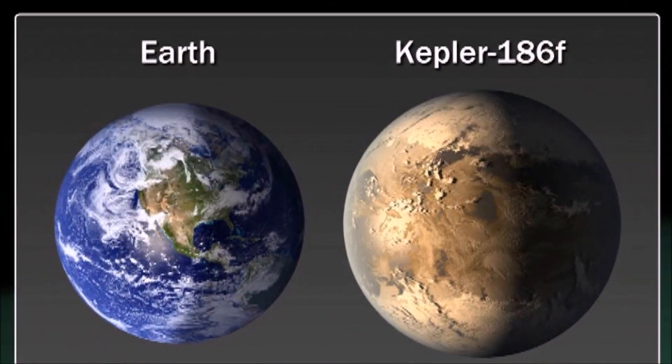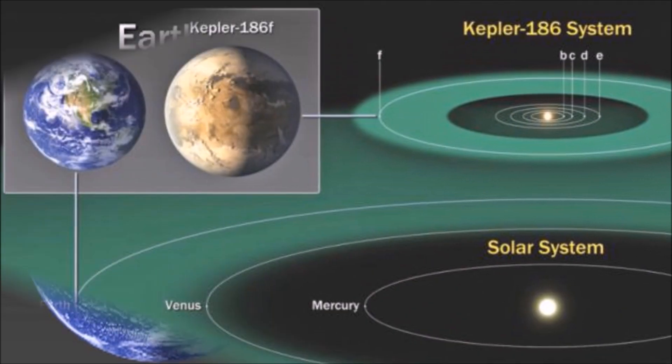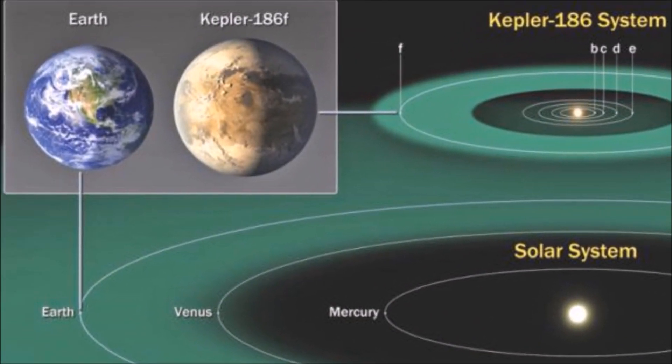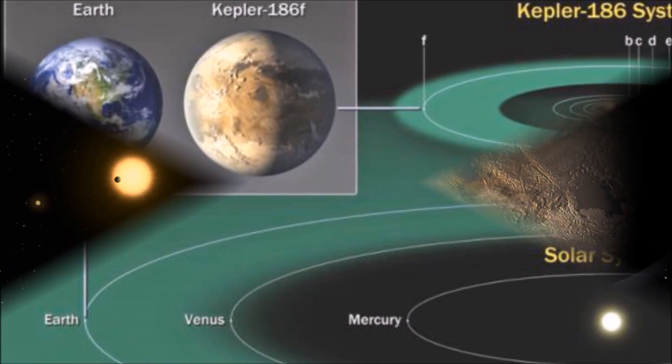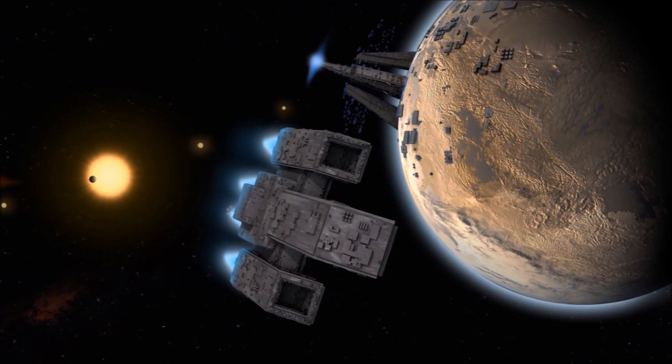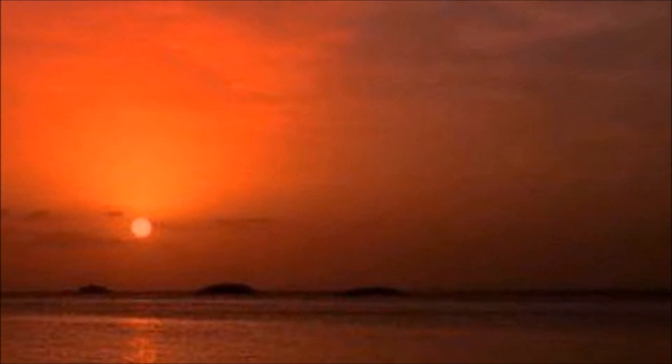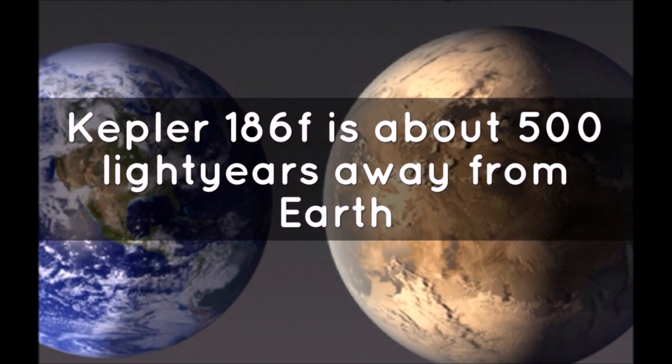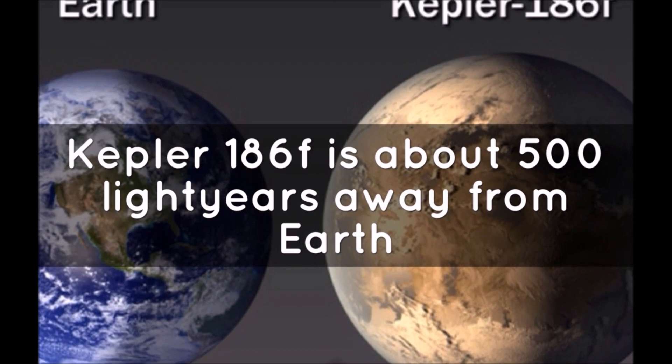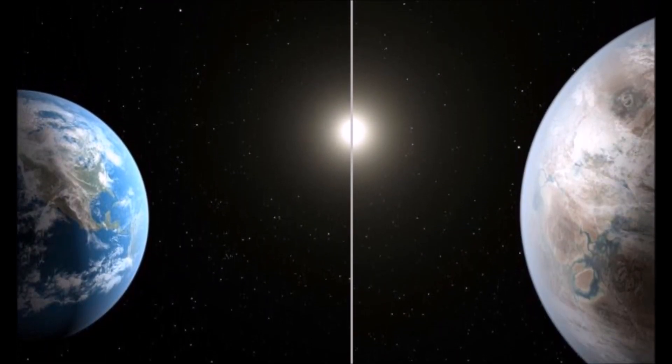From what we do know, Kepler-186f is very different from the Earth in a number of ways. First, its year is only 130 days long. It's also at the outer edge of the habitable zone, so the Sun from that planet is as dim as our Sun an hour before sunset. That means Kepler-186f doesn't receive nearly as much energy from its Sun as we do from ours here on Earth.